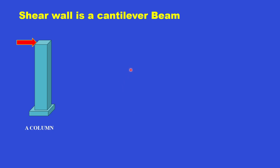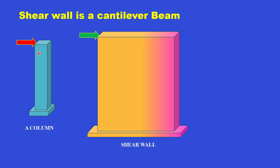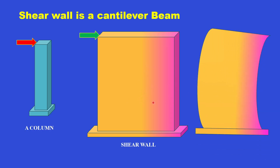A shear wall is basically a cantilever beam fixed at the base and free at the top, analogous to a column fixed at the base — except the shear wall is very wide in its length. The horizontal dimension is the length of the wall and the vertical dimension is the height. When resisting load in its own plane, the wall bends, developing tension on the left-hand side, and cracks may develop generally at the bottom. This is a plastic hinge generated in the wall, which we shall study in a future video.